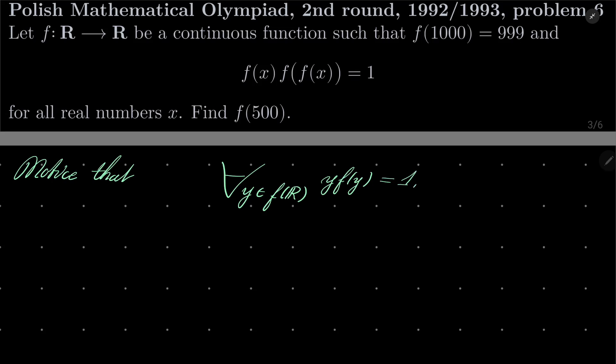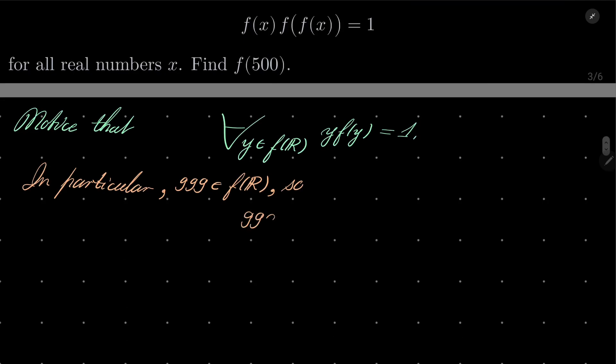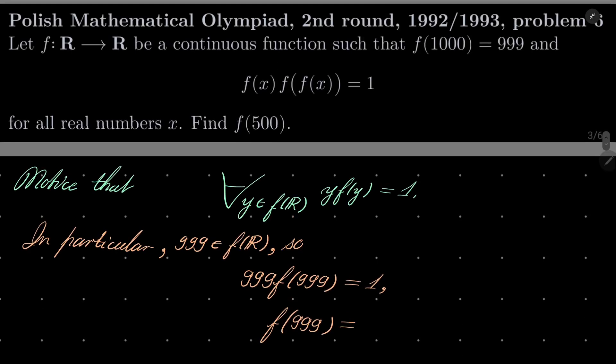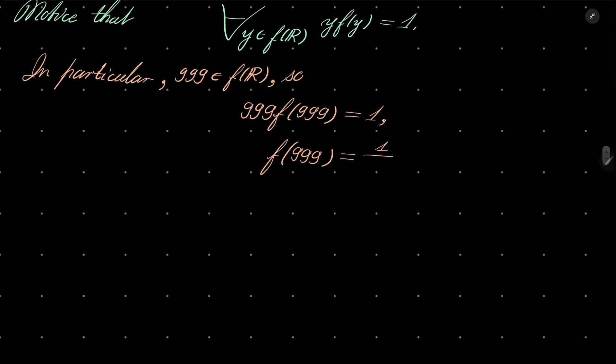In particular, 999 is in the image of our function. Why? Because it's f of 1000. 999 times f of 999 equals 1, which means that f of 999 equals 1 over 999.